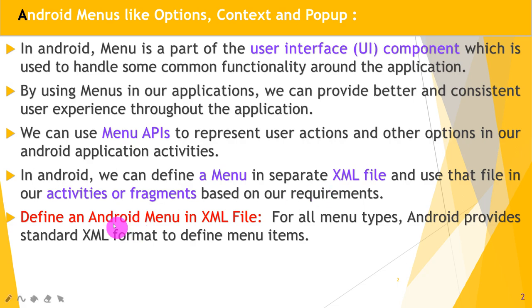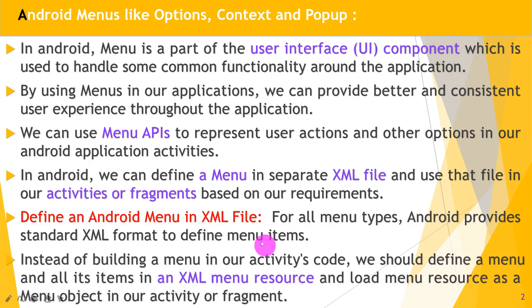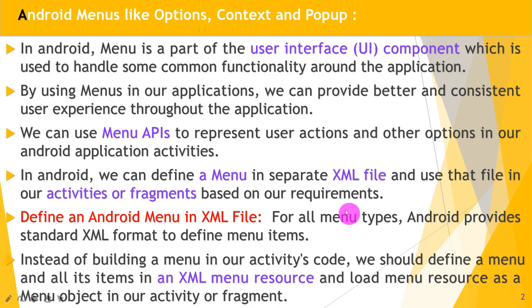So, defining an Android menu in an XML file: for all menu types, Android provides a standard XML format to define menu items. Instead of building a menu in our activity's code separately, we should define a menu and all its items in the XML menu resource, and load that menu resource as a menu object in our activity or fragment.